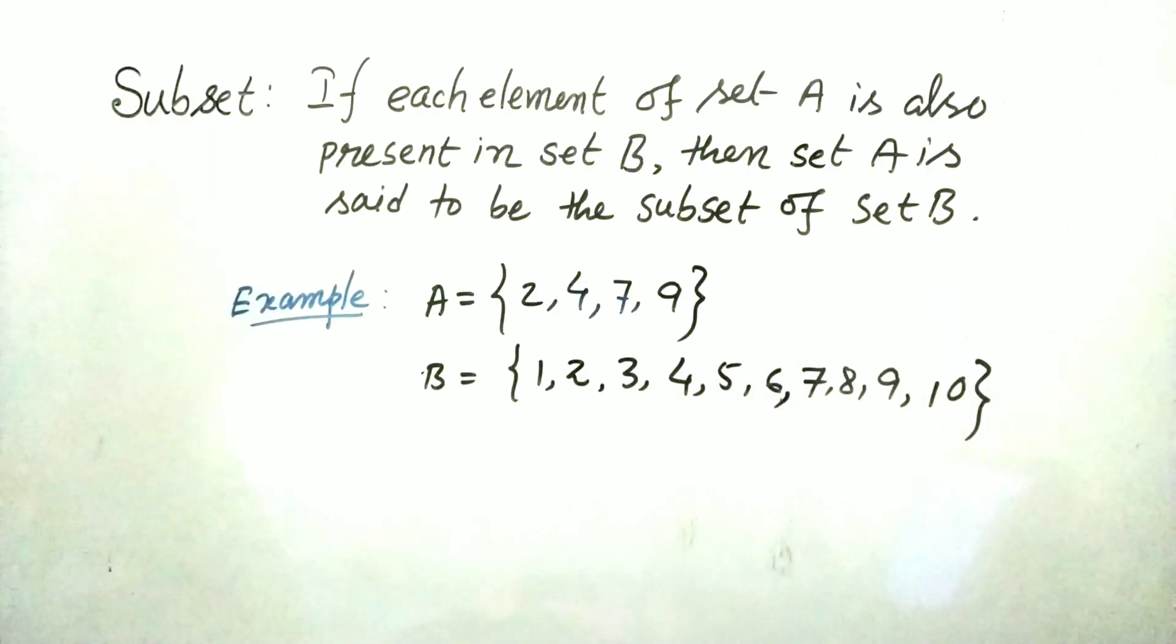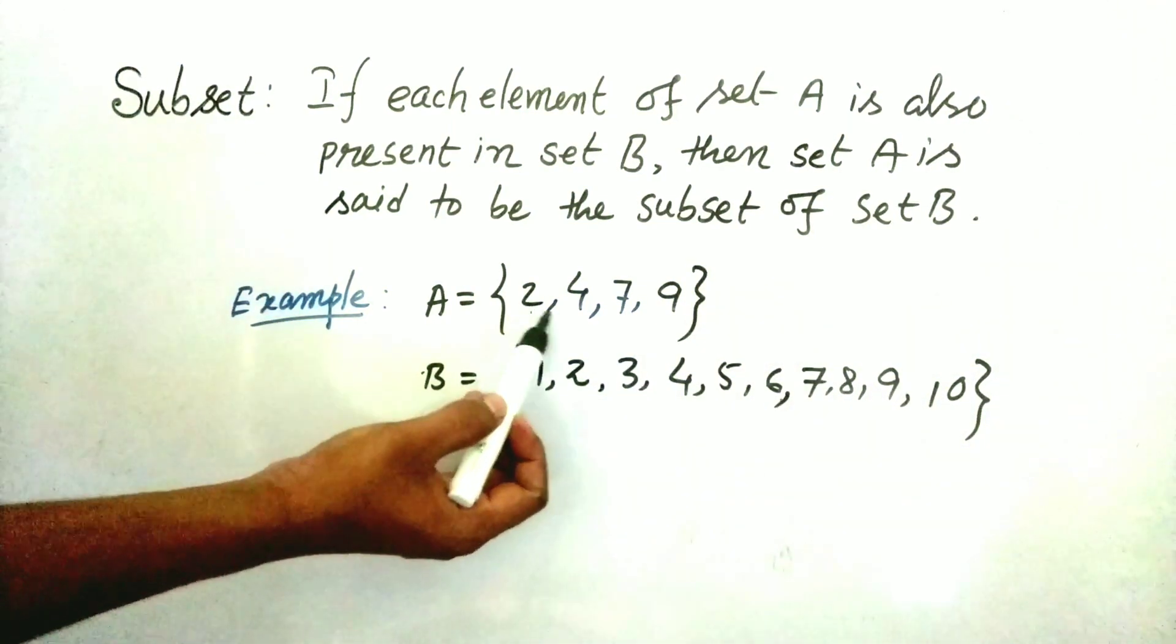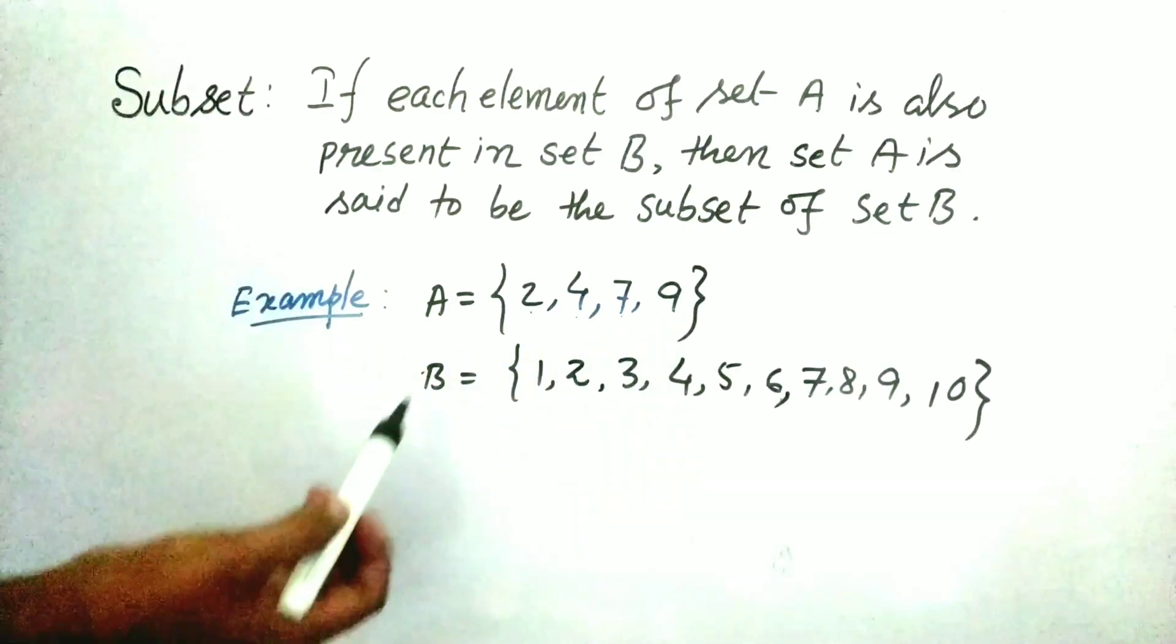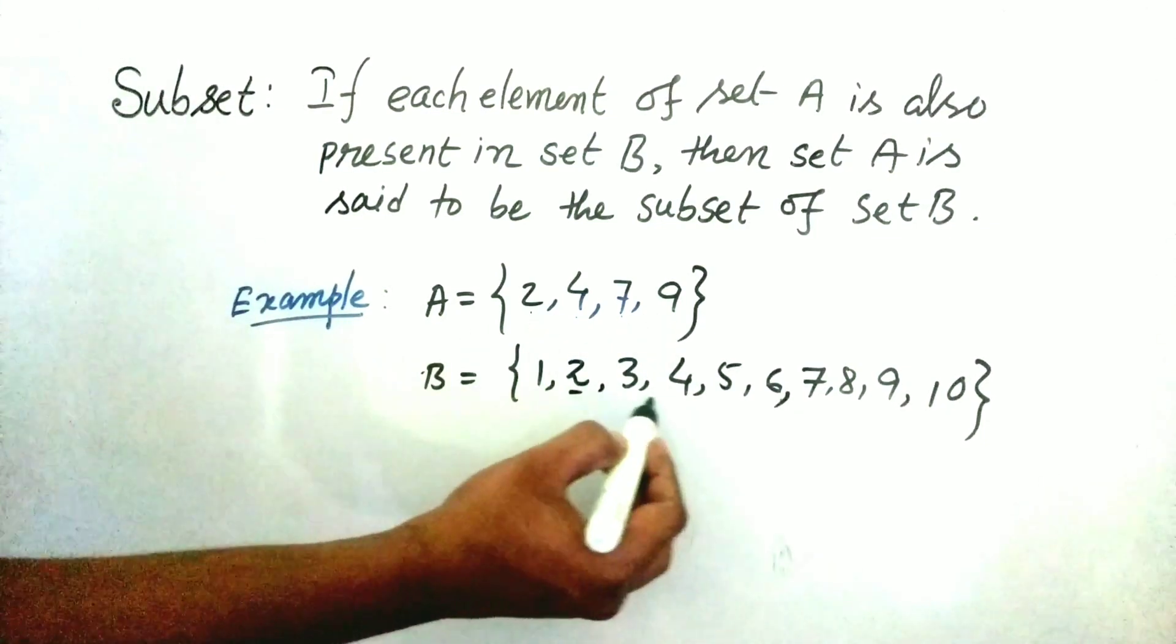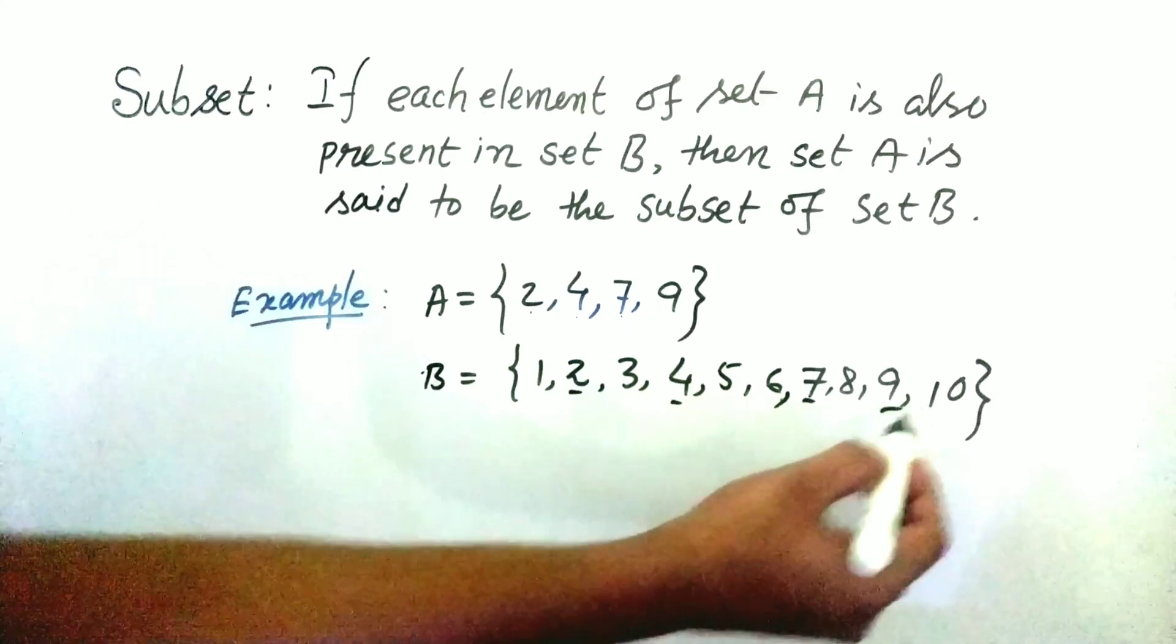For example, suppose A is equal to 2, 4, 7, 9 and B is equal to 1, 2, 3, 4, 5, 6, 7, 8, 9, 10. This implies that A is subset of B because these 2, 4, 7, 9 are also present here in B.